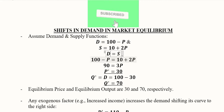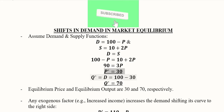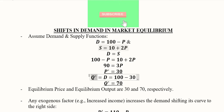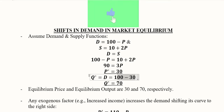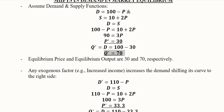Once we substitute the values of the demand and supply functions, we get an expression that gives us the equilibrium price, which is 30. Using that, we can find the equilibrium output by substituting the price value into either the demand or supply function. Here we use the demand function, and the equilibrium output is 70.